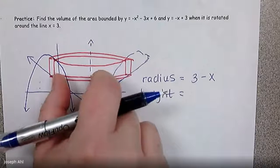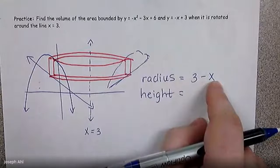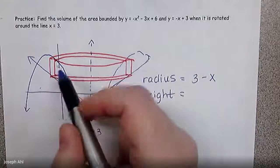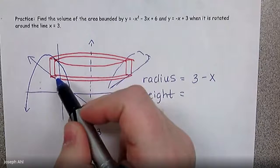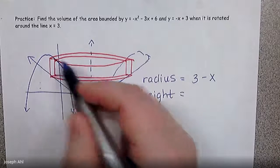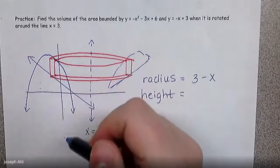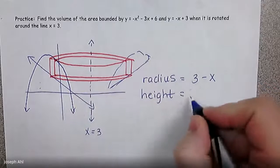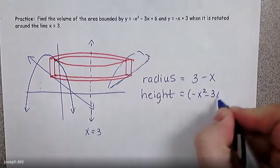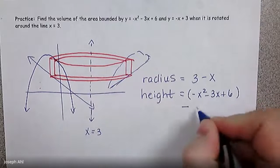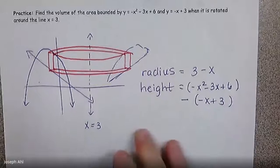So the radius part, hopefully that makes sense that we're going to define it as three minus x. As far as the height goes, the height at any given point for our cylindrical shells is going to be the top minus the bottom, meaning the parabola minus the linear part. So it's going to be negative x squared minus three x plus six minus the linear negative x plus three.